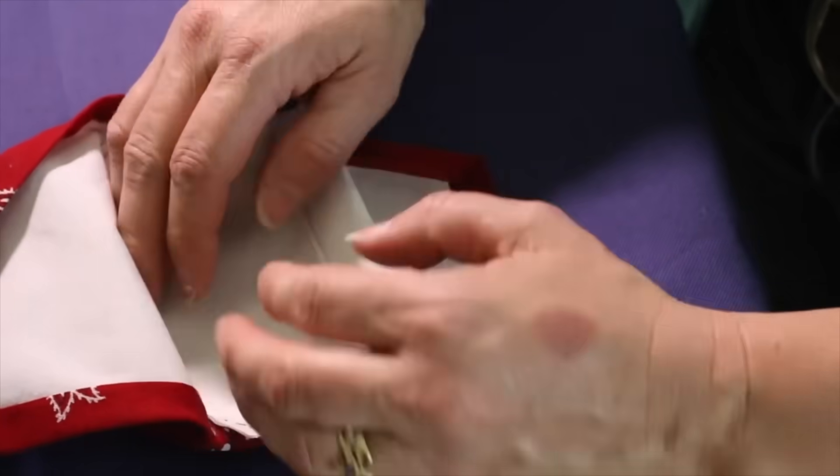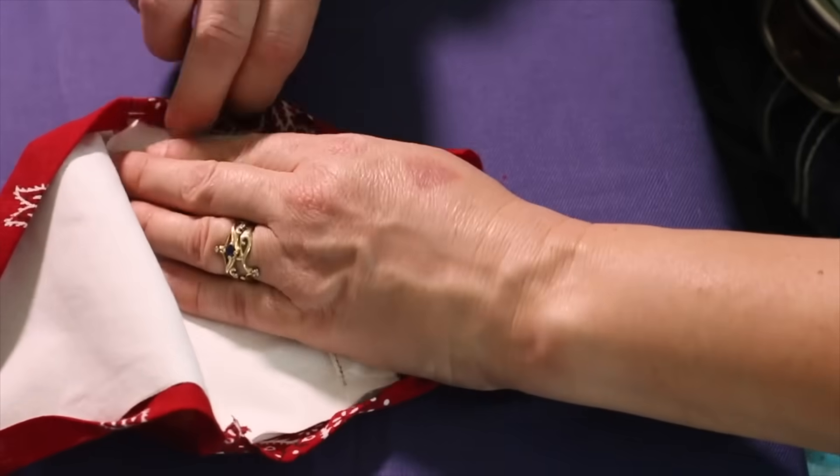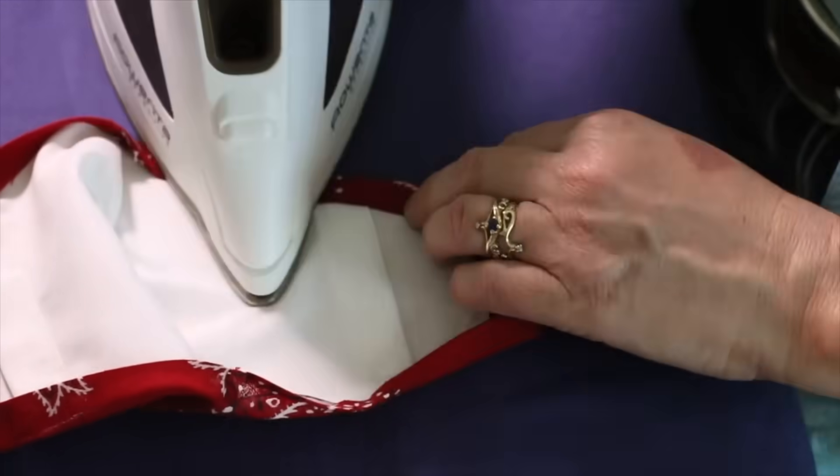After stitching, insert the filter pocket on top of the liner, matching all the corner points. Then tuck it under the pre-ironed edges. If you need to, iron the edges again.